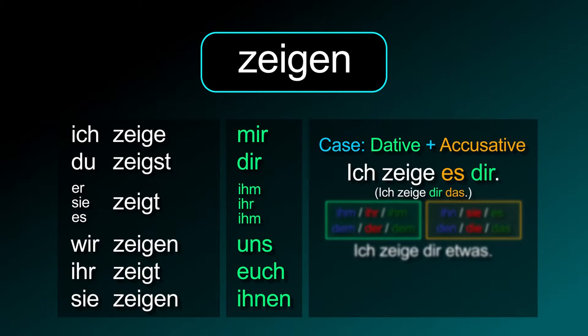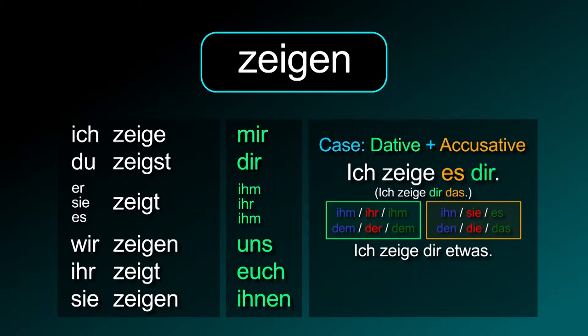Use the correct article or personal pronoun depending on the person's and the noun's gender. 'I show you something' is: ich zeige dir etwas.